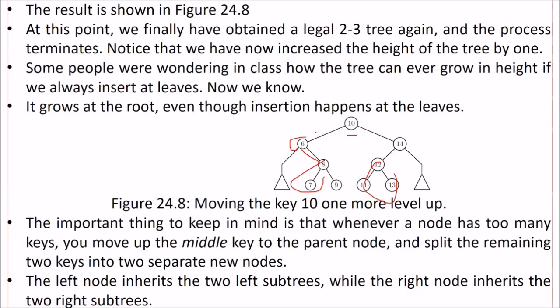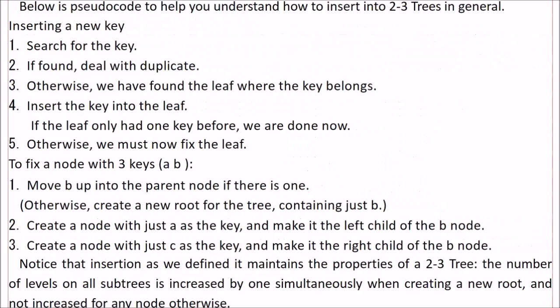We have now increased the height of the tree. There are three levels now. How can the tree ever grow in height if we always insert at leaves? Now we know how it happens. It grows at the root even though the insertion happens at the leaves. The important thing to keep in mind is that whenever a node has too many keys, you move up the middle key to the parent node and split the remaining two keys into two separate nodes. The left node inherits the two left subtrees while the right node inherits the two right subtrees.